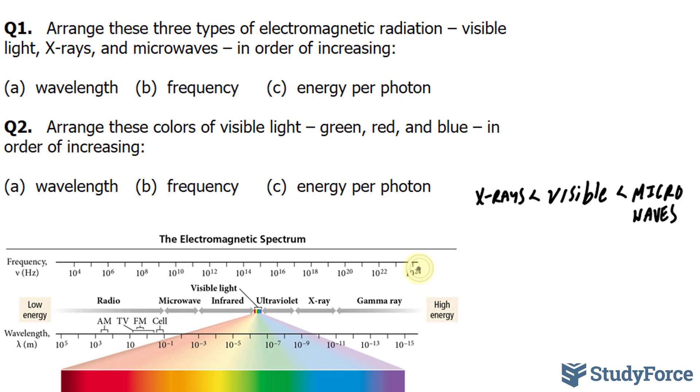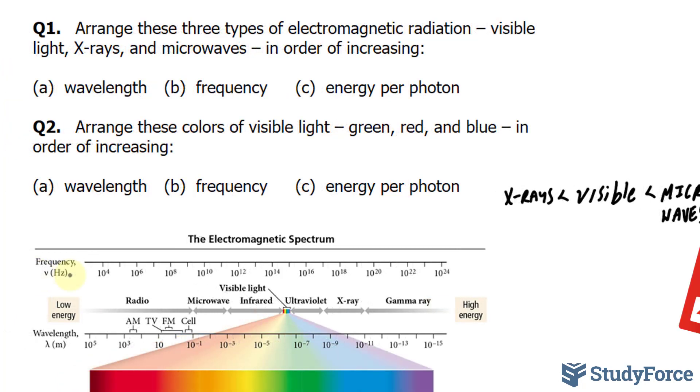Next, we'll look at frequency. Frequency is shown over here. Remember that frequency and wavelength are inversely proportional. In other words, the longer the wavelength, the shorter the frequency, or the longer the frequency, the smaller the wavelength.